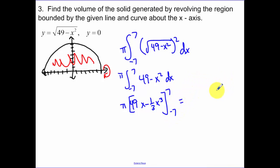Taking my integral, we have 49x minus 1 third x to the third. And again, I'm not going to lie to you guys. I used my calculator and I got 1372 pi over 3.